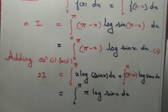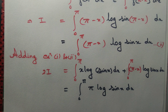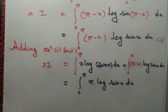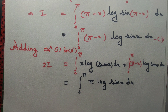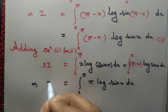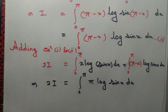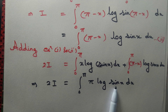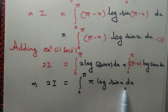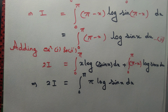So we have simplified the integral a bit but we are still not done. So far we have 2I = ∫₀^π π·log(sin x)dx. You may be tempted to replace x by π - x, but that doesn't help because sin(180° - θ) = sin θ, so we would get the same integral.